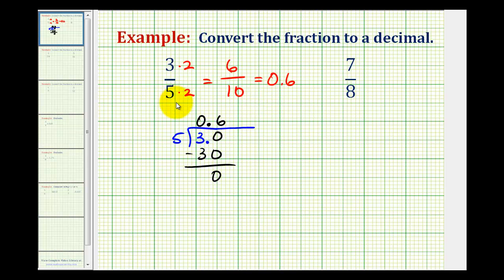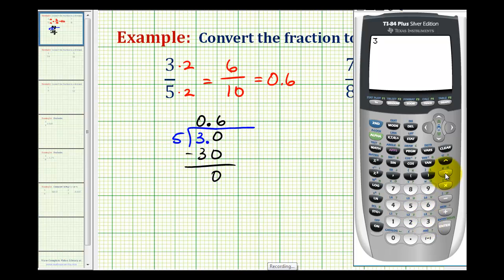And of course, we can always check this on the calculator. Let's go ahead and do that. 3 divided by 5 does give us 0.6.